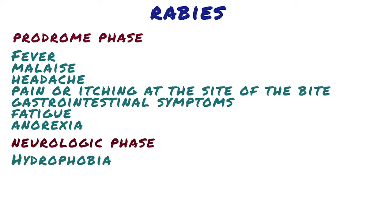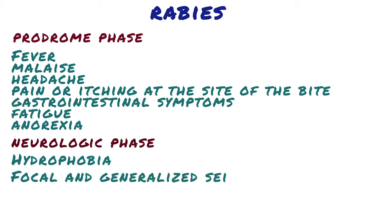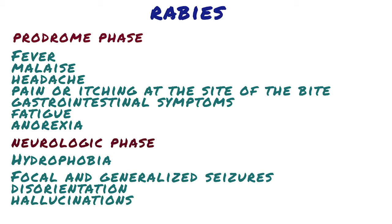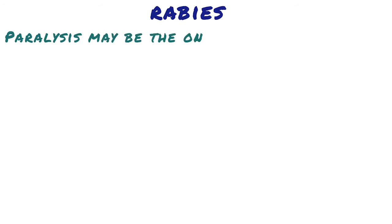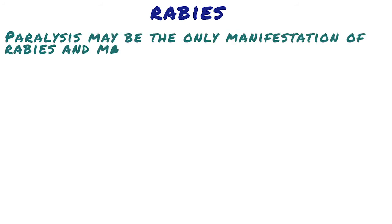Hydrophobia, the most characteristic symptom of rabies, occurs in 20% to 50% of patients. It is triggered by the pain associated with the patient's attempts to swallow water. Focal and generalized seizures, disorientation, and hallucinations are also common during the neurologic phase. Paralysis may be the only manifestation of rabies and may lead to respiratory failure. The patient becomes comatose after the neurologic phase, which lasts from 2 to 10 days. This phase almost universally leads to death, resulting from neurologic and pulmonary complications.